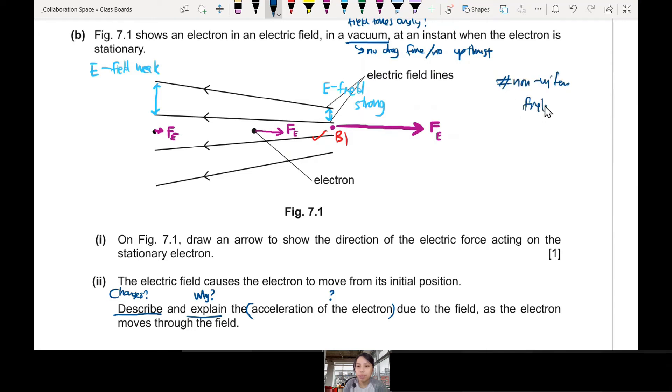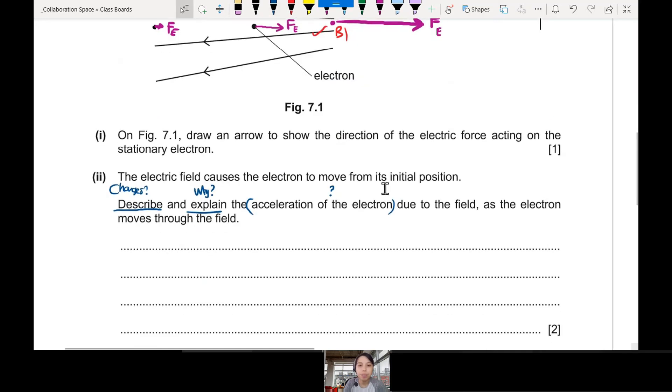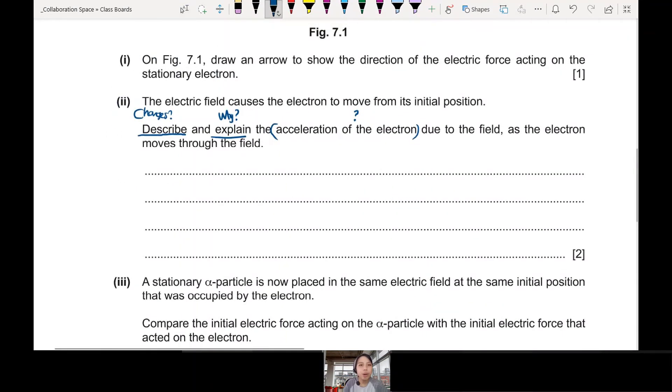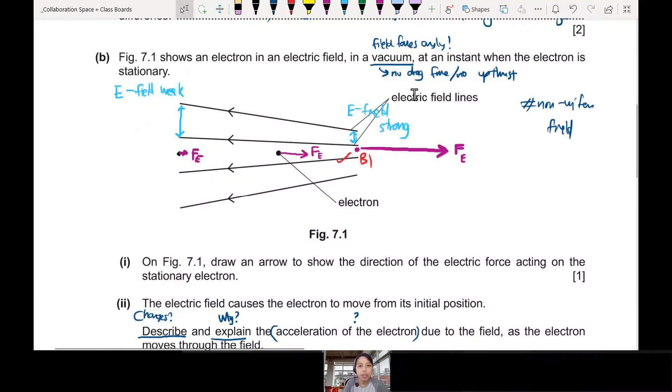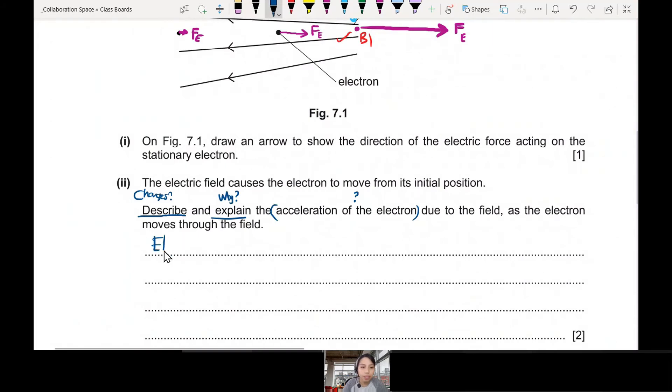For example, if I'm on here, E field is very weak. I just draw a small little arrow. Very weak. But if you're on the right side, very strong field. I draw a big long arrow because these are vectors and the magnitude is much larger. Very strange. This is a non-uniform field. So how can we check and see what answers we have that can be marked? Let's talk about the electric field strength first.